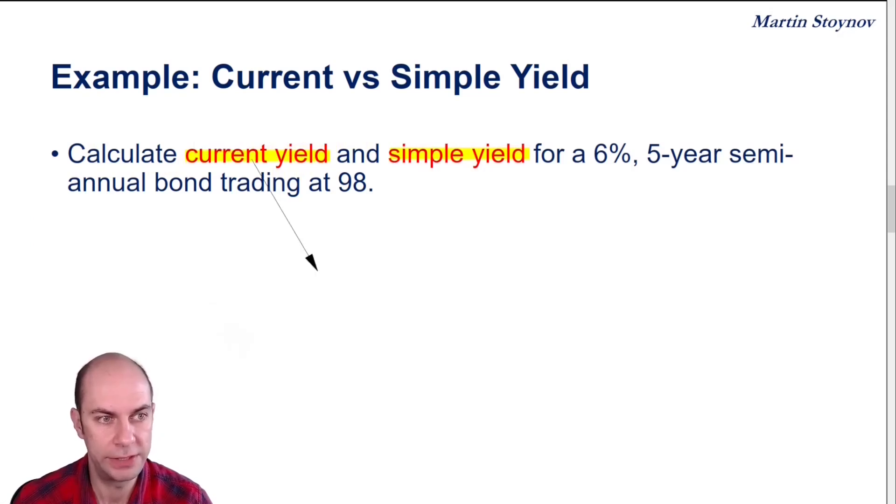The current yield is calculated as our coupon over our price. So this is kind of the equivalent of dividend yield for bonds.